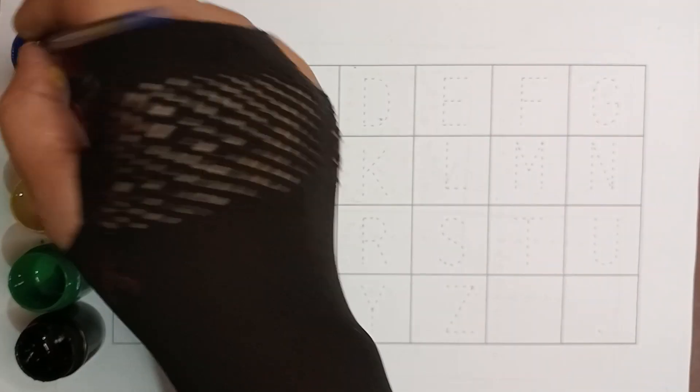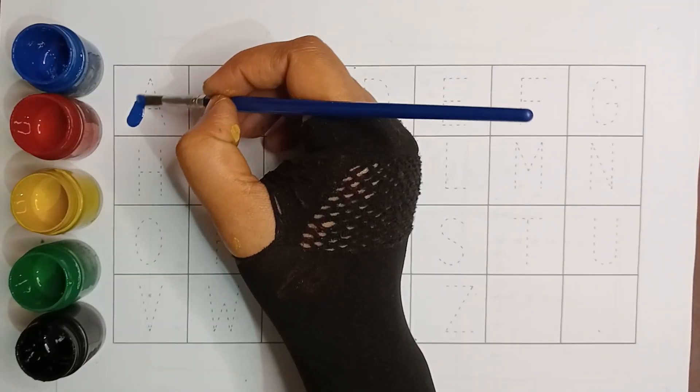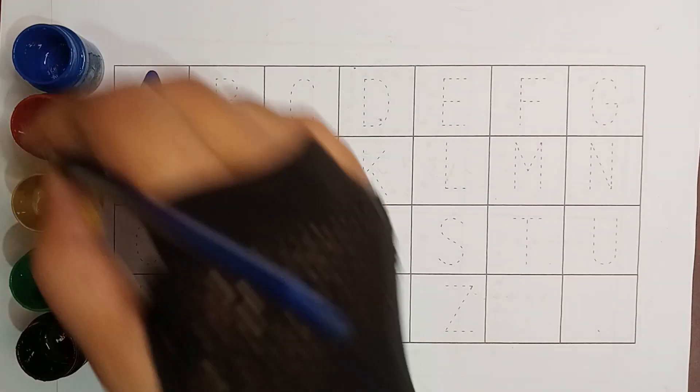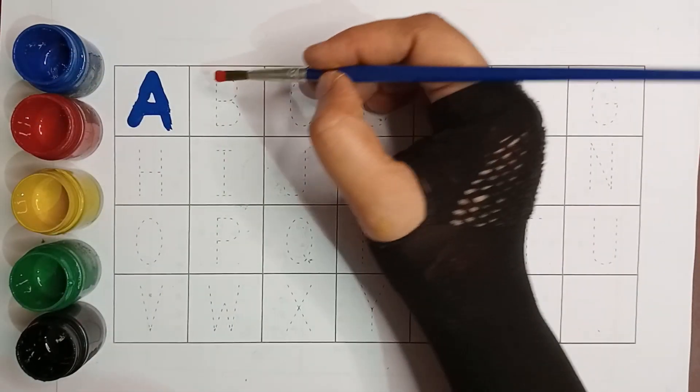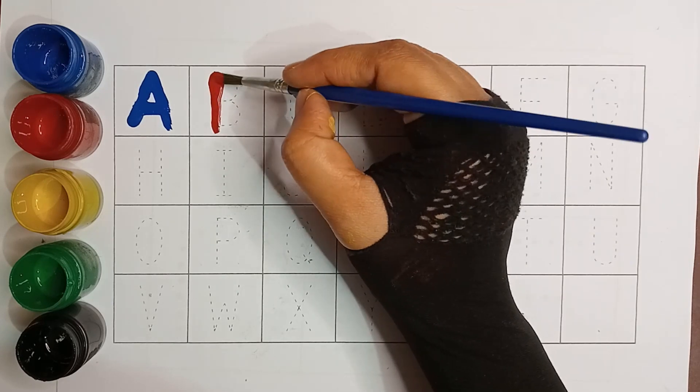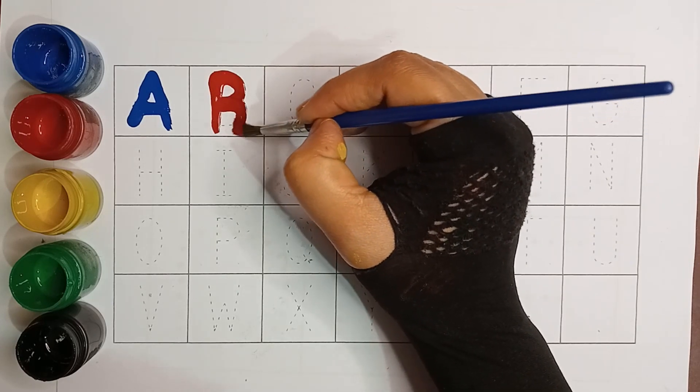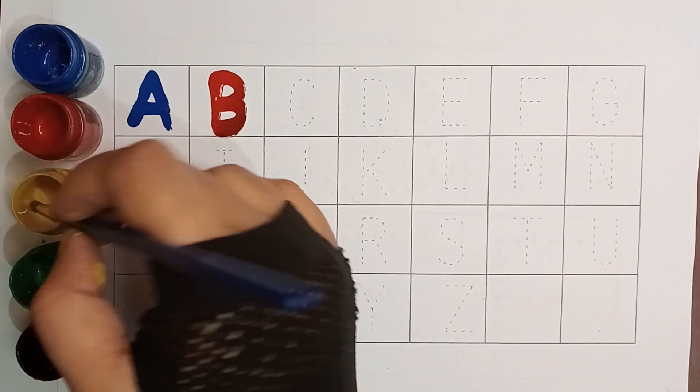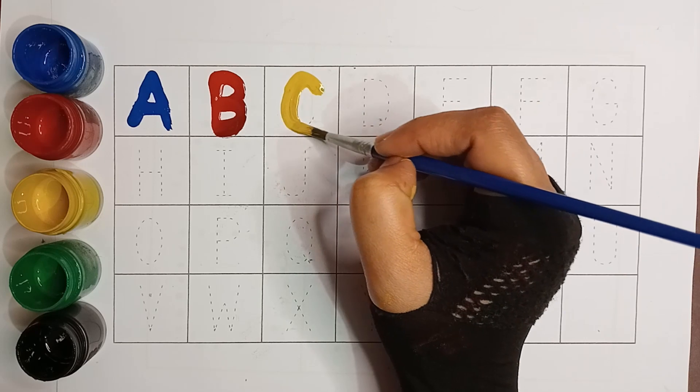Blue color A. Red color B. B for ball. Yellow color C. C for cat.